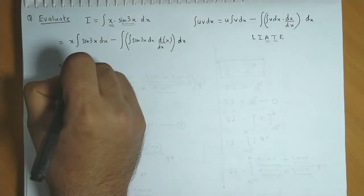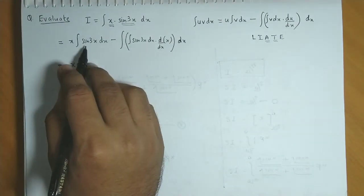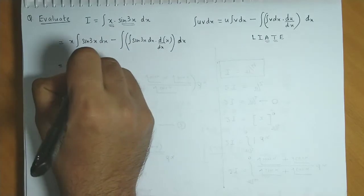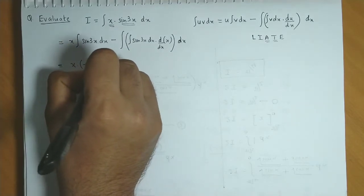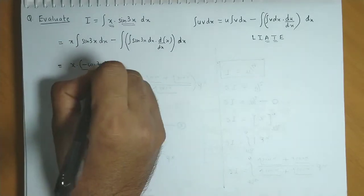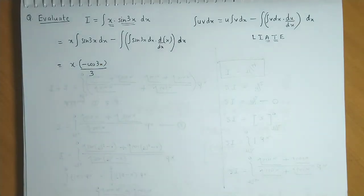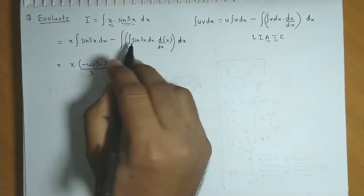So the next step would be x times, now integration of sine 3x is minus cos 3x upon coefficient of x, that is 3, minus, over here,